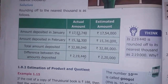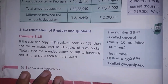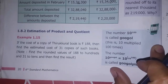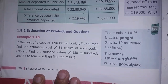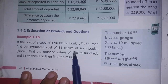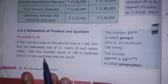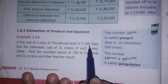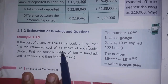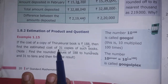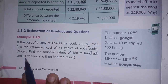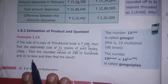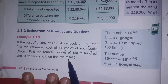Next, example 1.15. If the cost of a copy of a book is Rs. 188, then find the estimated cost of 31 copies of such books. Note: find the rounded values of 188 to the nearest 100 and 31 to the nearest 10, then find the result.